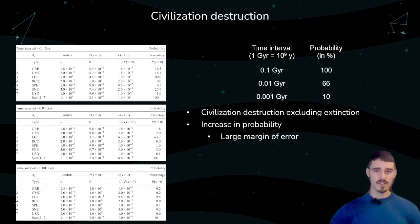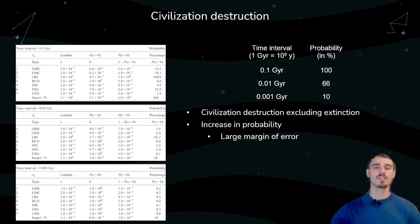If we look at the civilization destruction probability — excluding extinction — the probability is shown to have increased in all time intervals. LBI is still the most probable one, even reaching 100% on the 100 million year chart. However, these results are highly speculative, with a large margin of error, since we have never observed an ETI that was destroyed and managed to rebound back from an astrophysical catastrophe.